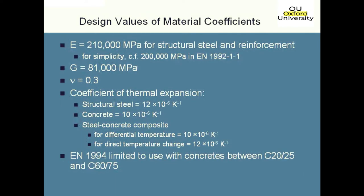This slide gives you the general properties for steel and they are slightly different to BS5400 but not a lot. The elastic modulus is 210 GPa and you use 210 GPa for both the structural steel and reinforcement if you're dealing with a composite section — that's just a simplification. So you're not trying to deal with both your structural steel and your reinforcement having slightly different elastic moduli; this has just been simplified to use 210 GPa for both.